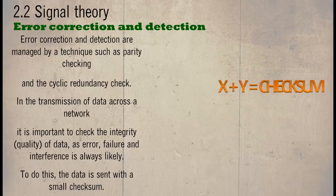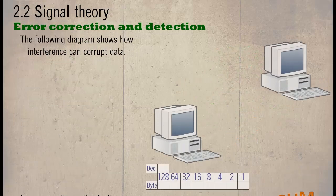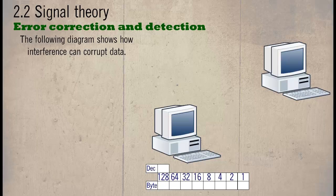To do this, the data is set with a small checksum. The following diagram shows how interference can corrupt data.